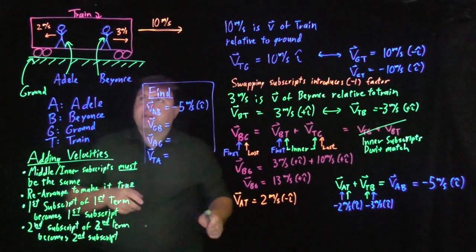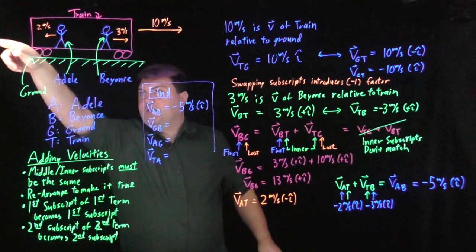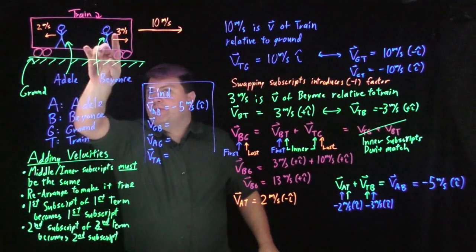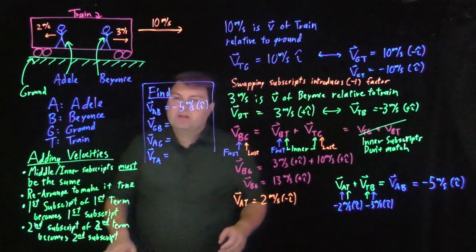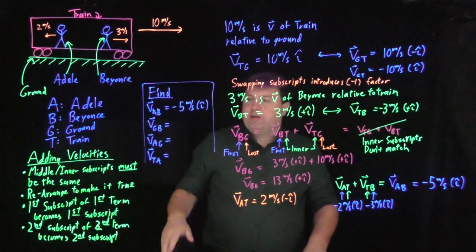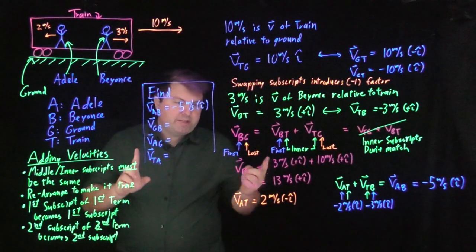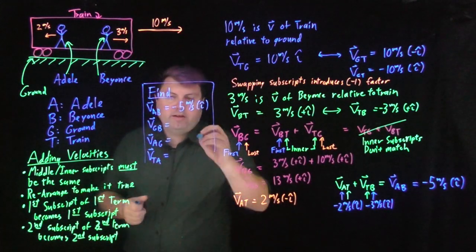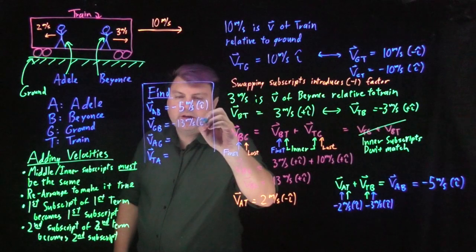Let's think about that: if Beyonce is moving 3 this way and Adele is moving 2 the other way, then Adele is moving 5 in the negative direction from Beyonce's reference frame. For V_GB, that is V_BG flipped, so we get negative 13 meters per second in i-hat.